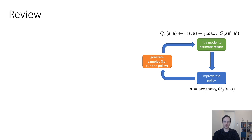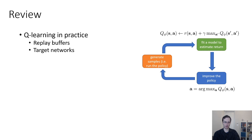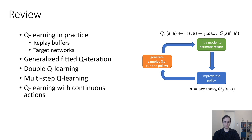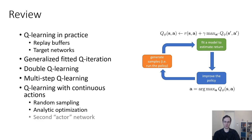To recap what we covered in today's lecture: we talked about Q-learning in practice, how to use replay buffers and target networks to stabilize it. We talked about a generalized view of three processes, how double Q-learning can make Q-learning algorithms work much better, how to do multi-step Q-learning, and how to do Q-learning with continuous actions — including with random sampling, analytic optimization, and a second actor network.